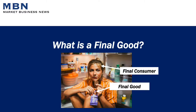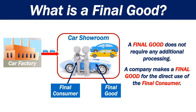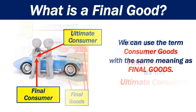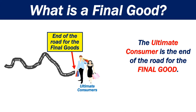What is a final good? A final good is a product that the final consumer uses or consumes. A final good does not require any additional processing. A company makes a final good for the direct use of the final consumer. Some people refer to the final consumer as the ultimate consumer. We can use the term consumer goods with the same meaning as final goods. The ultimate consumer is the end of the road for the final good.